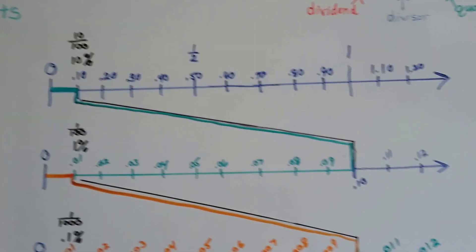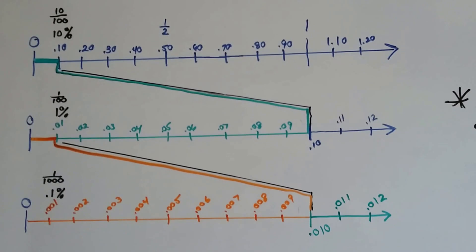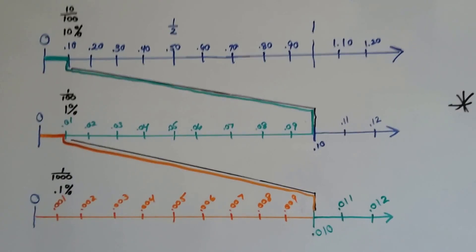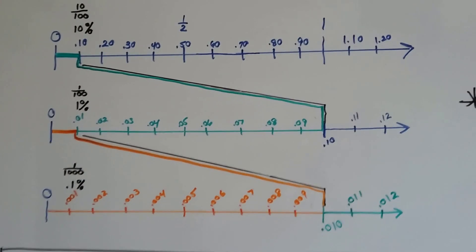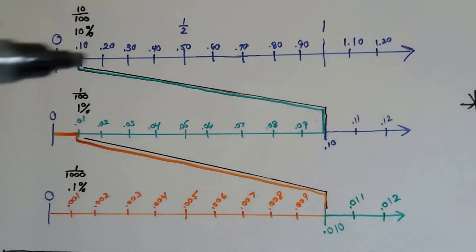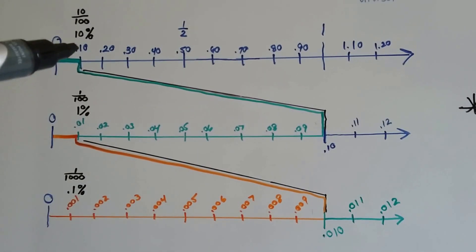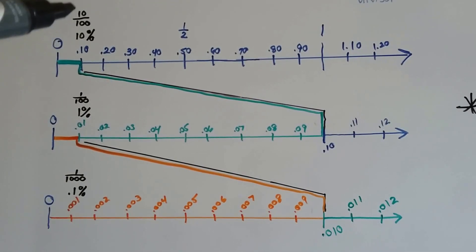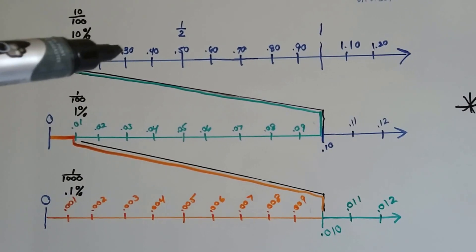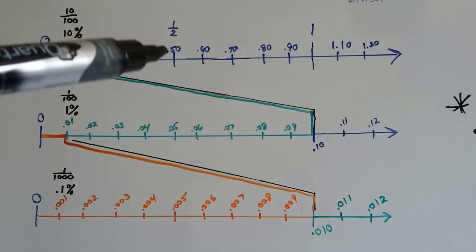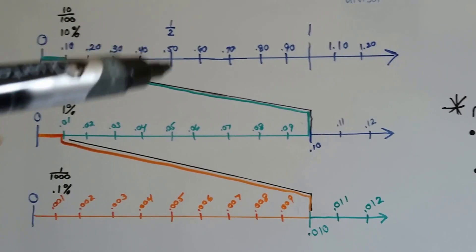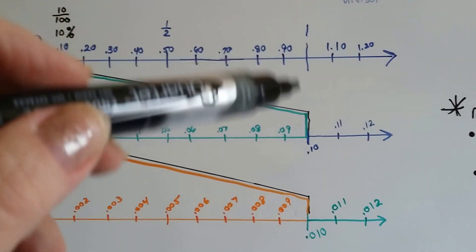What I did was I made a really nice number line, and the top one here shows 0 to 1 whole. Each mark is 10 percent. So we have 10 percent, which is 10 one-hundredths, 20 percent, 30 percent, or 30 hundredths, 0.50, 50 percent is the halfway mark, and here is one whole.